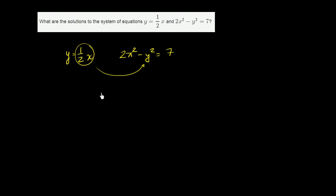So on this equation, we have 2x squared minus y squared. But now we're saying that y must also be equal to 1 half x. And that is going to be equal to 7. Now let's see if we can solve for x doing a little bit of algebraic manipulation.